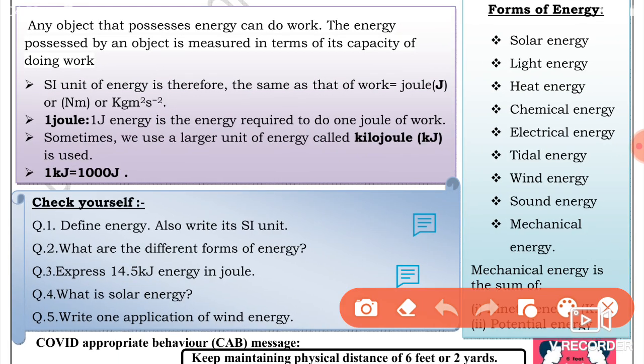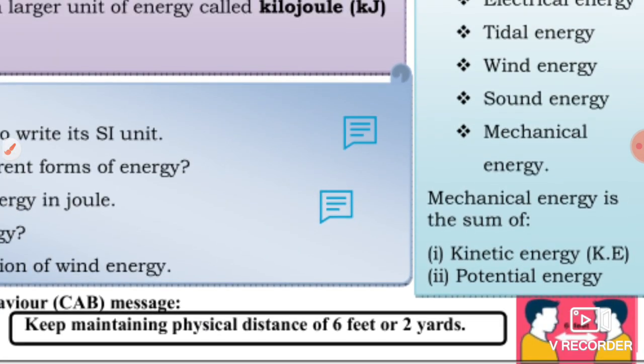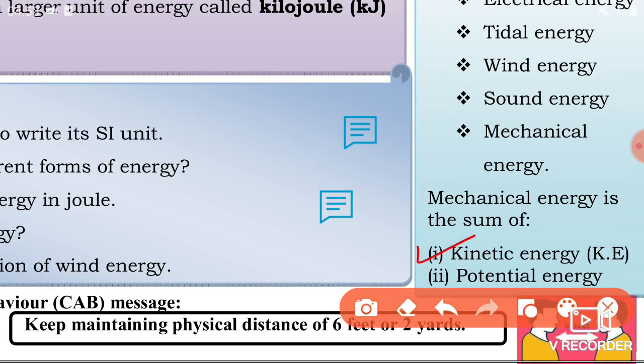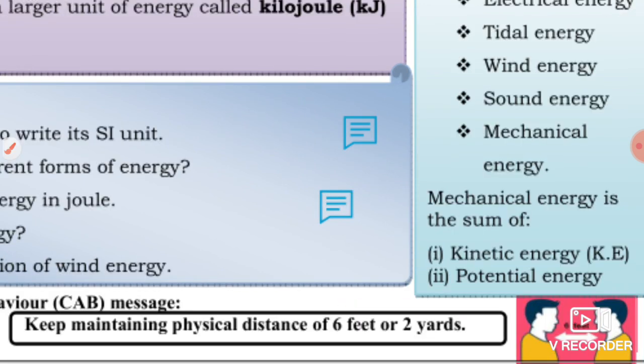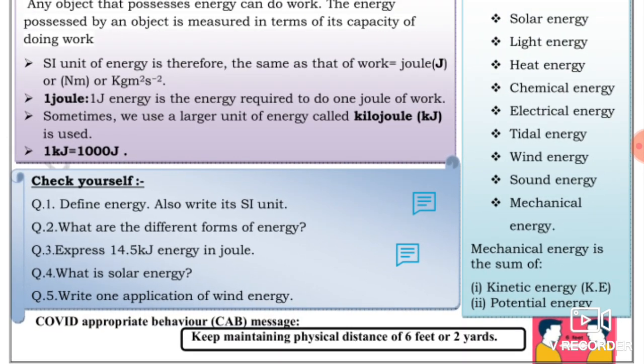Now there are also forms of energy: solar energy, light energy, heat energy, chemical energy, electrical energy, tidal energy, wind energy, sound energy, and mechanical energy. The mechanical energy is made from two energies: kinetic energy and potential energy. We will study all about these energies in the next worksheet.